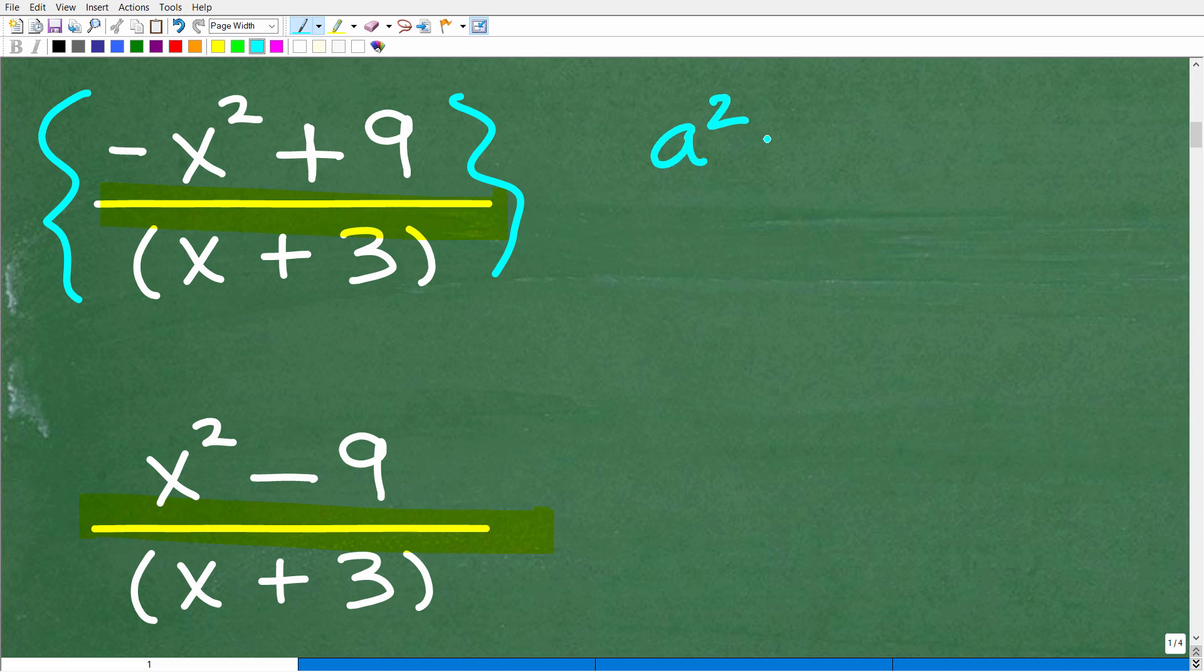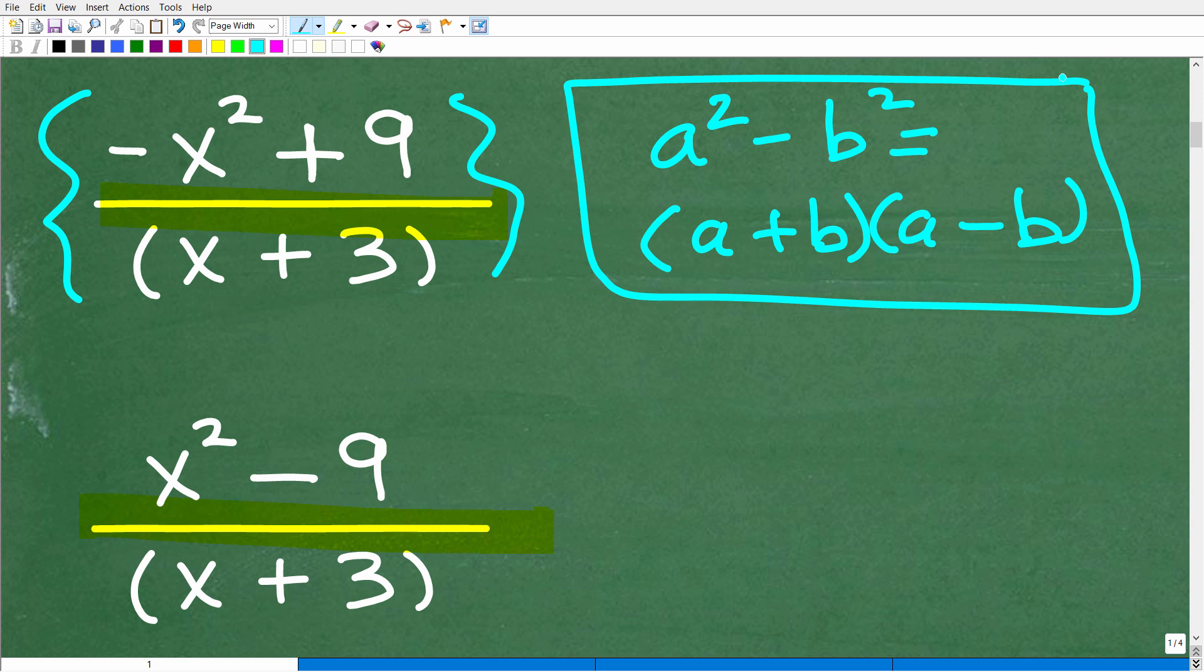Let's review that real quick. We have a squared minus b squared is equal to a plus b times a minus b. This is a critical formula to understand in factoring.